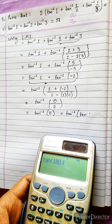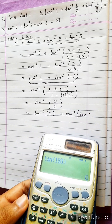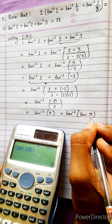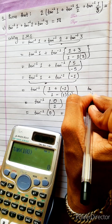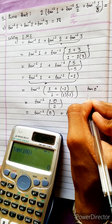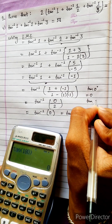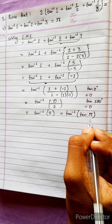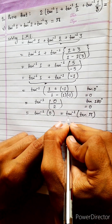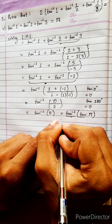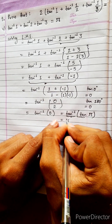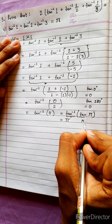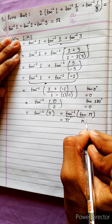tan(0°) = 0 and tan(180°) = 0. So tan⁻¹(0) gives two possible values: 0 or π. Since tan⁻¹ and tan cancel, we get π. So solving the LHS, we got the middle value π.